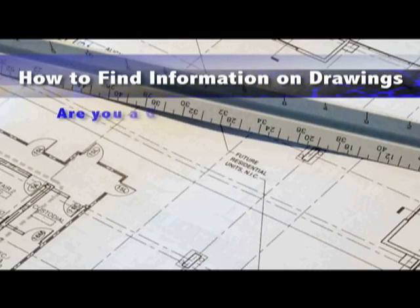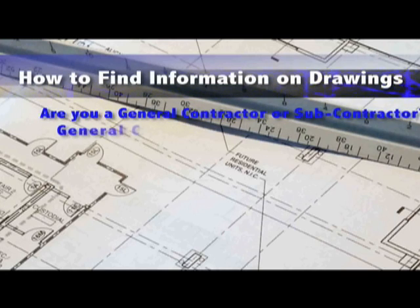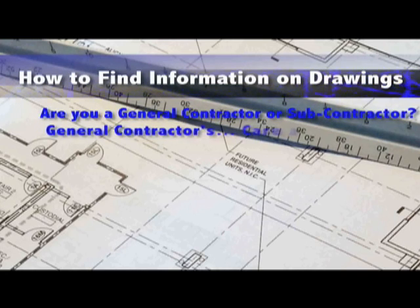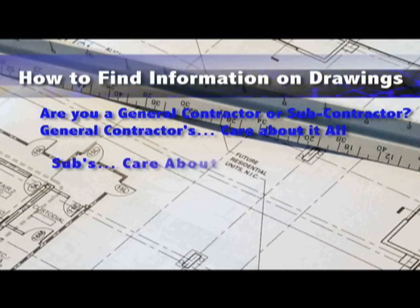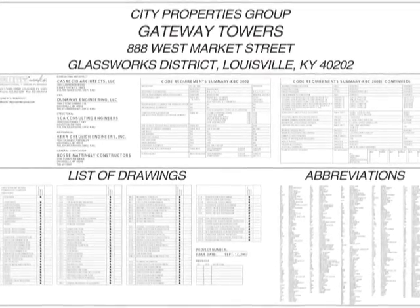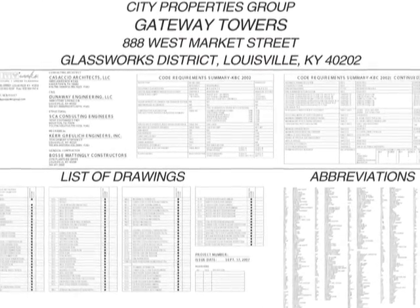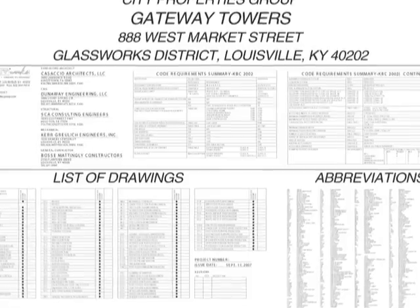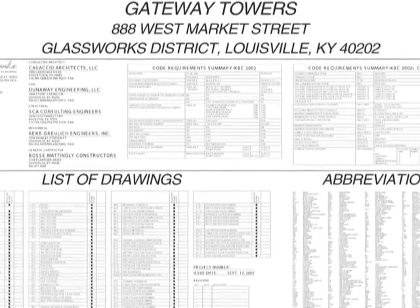How to find information: first, are you a general contractor or a subcontractor? The answer defines how you approach the drawing review. If you are a GC, then it all applies to you and you care about all the information on all the pages. If you are a sub, you care about your specific trade and discipline and how other trades might impact your work. In all cases, I start with the title sheet — review it and understand how the drawings are organized, and if you are a sub, what sheets pertain to your work.